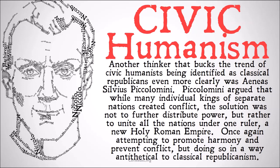Another thinker that bucks the trend of civic humanists being identified as classical republicans even more was Aeneas Silvius Piccolomini. Piccolomini argued that while many individual kings of separate nations created conflict, the solution was not to further distribute power, but rather to unite all nations under one ruler — a new Holy Roman Empire — once again attempting to promote harmony and prevent conflict, but doing so in a way that was antithetical to classical republicanism. So some crossover in beliefs, but a civic humanist who fit a very different mold.